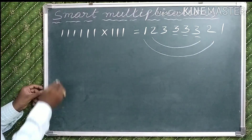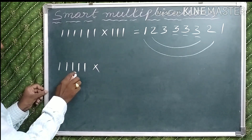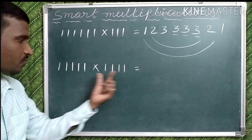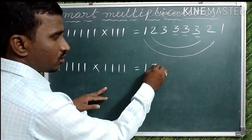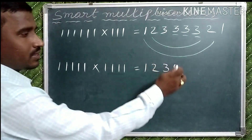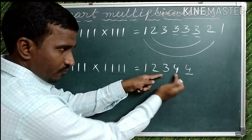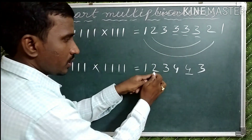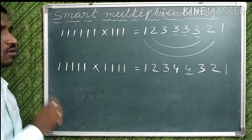Observe one more example: 11111 (5 ones) into 1111 (4 ones). Least number of ones is 4, so write 1, 2, 3, 4. How many ones are different? Only one. The highest number is 4, so it repeats one time. Then write before 4 in descending order: 3, 2, 1. That is the answer: 1, 2, 3, 4, 4, 3, 2, 1.